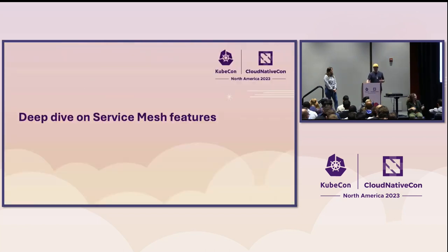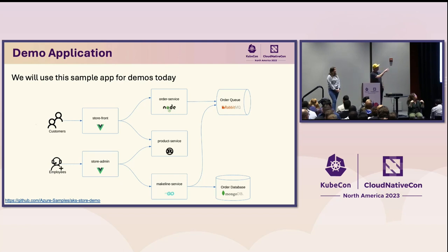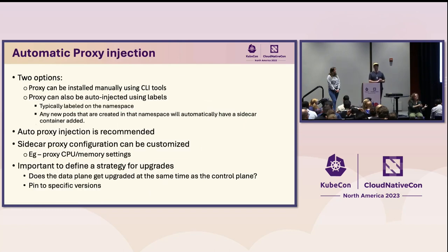Let's deep dive into some features. For demos, I'm going to use a demo application — a simple pet store with a series of microservices. There's an order service, and we're going to do some interesting traffic shifting and observability around it. This is actually on GitHub — you can grab the sample and run it. It's pure Kubernetes and runs on any kind of environment. Think about this diagram as we go — we're going to mesh it live.